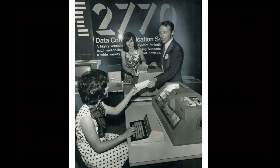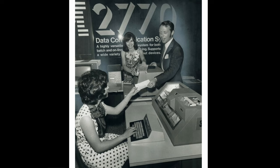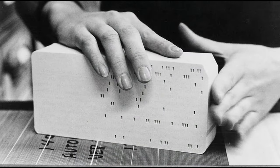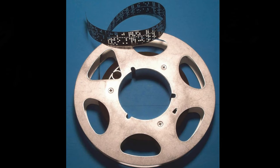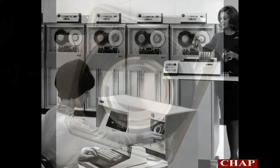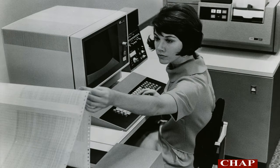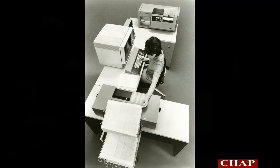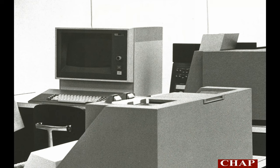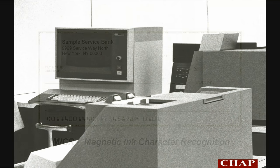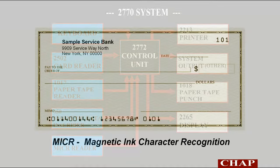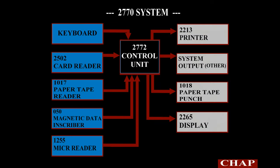In today's complex business world, data communication takes many forms: punched cards, punched paper tape, magnetic tape, manual keyboard entry, printers, displays, MICR checks. The 2770 data communication system will operate with any of these types of devices.